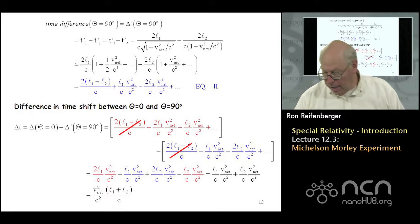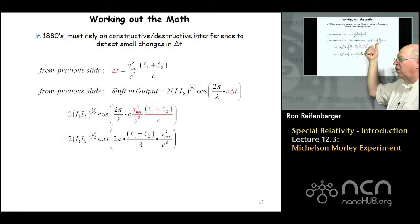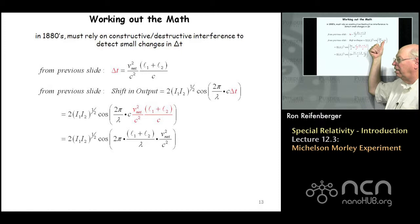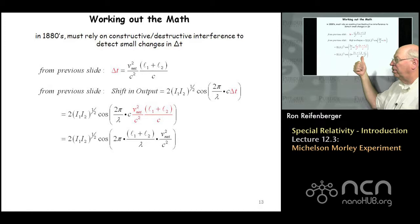Working out the math, the time interval delta t shows up in the argument of a cosine, and it shifts the observed fringes by an amount given by c times delta t. Using the expression for delta t, the shift in the output is proportional to V_net squared over c squared, and also depends on the ratio of L1 plus L2 divided by the wavelength of the light.